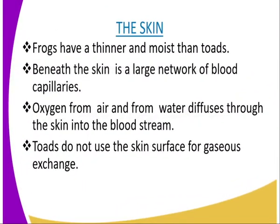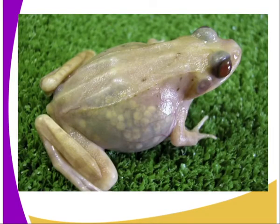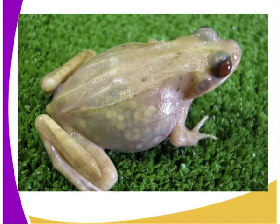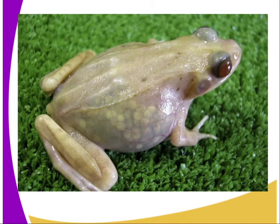The last organ where gaseous exchange in amphibians takes place is the skin. Let us look at the skin of an amphibian, using the example of a frog. Frogs have a very thin and moist skin compared to toads. Beneath the skin is a large network of blood capillaries, which are distributed all over the body as seen in our diagram. Oxygen from the air and from the water diffuses through the skin into the bloodstream. Carbon dioxide in the blood diffuses through the skin into the surrounding water and air.